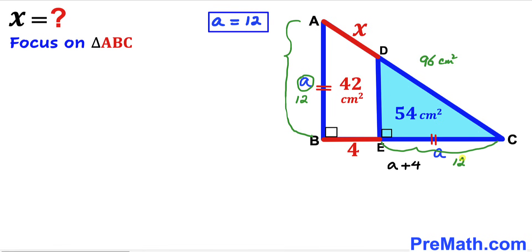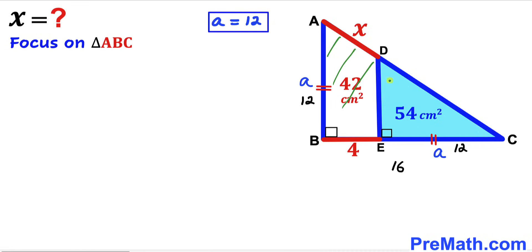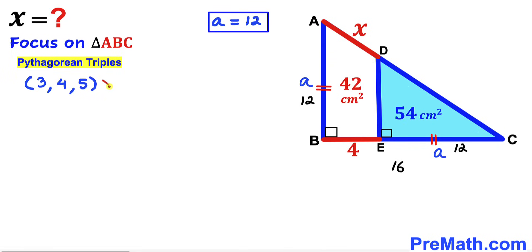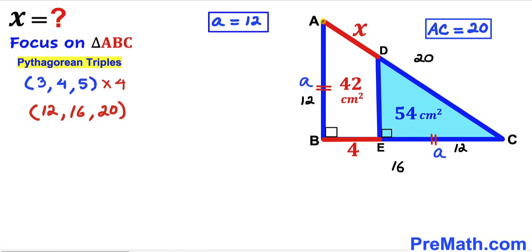With a equals 12, the whole side BC is a plus 4 equals 12 plus 4 equals 16 centimeters. Recalling the Pythagorean triplet 3-4-5 and multiplying by 4: we get 12, 16, and 20. Since our sides are 12 and 16, the hypotenuse AC turns out to be 20 centimeters.